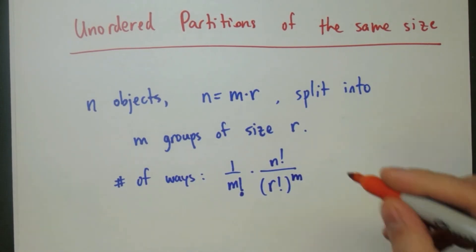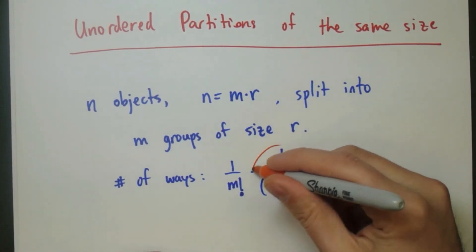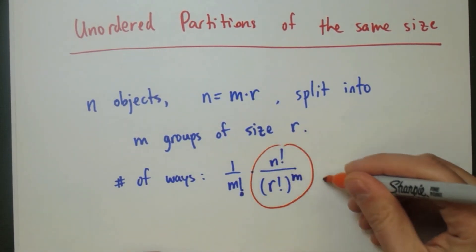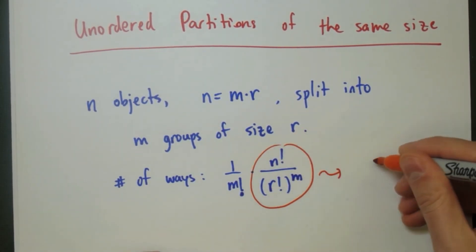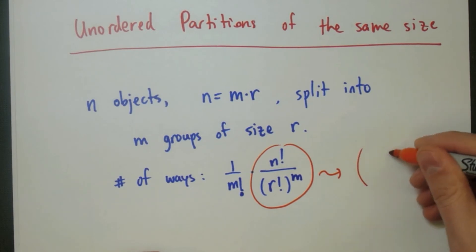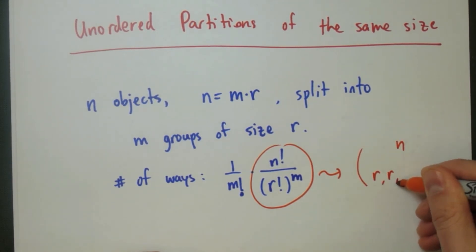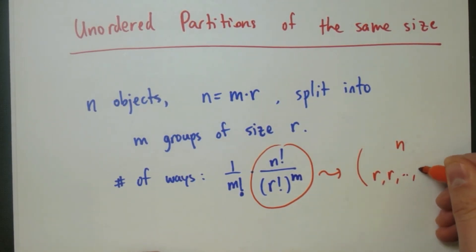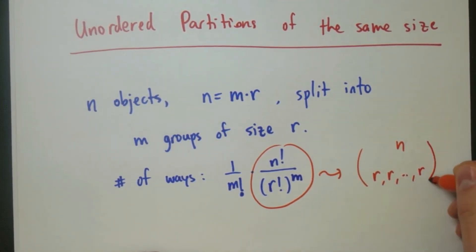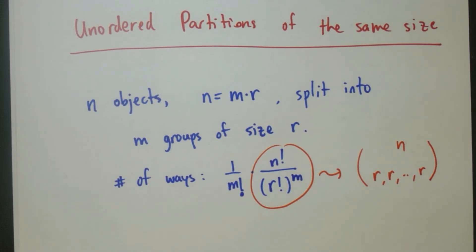This might look a bit more confusing, but that last term is just the multinomial coefficient. This is n, and we're breaking it up into m groups of r — so n choose r, r, r, ... (m times).